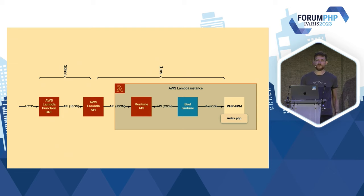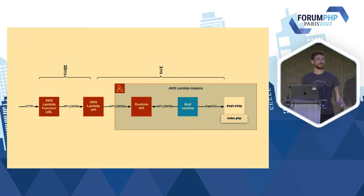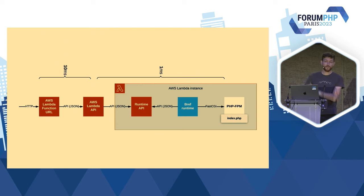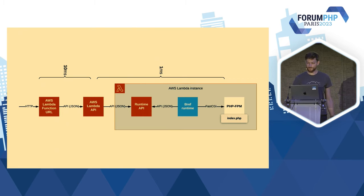Au début, j'avais fait plein de benchmarks sur Bref, quelles stratégies pour adopter — faire des extensions en C, des forks de FPM, est-ce qu'on ne pourrait pas réécrire tout ça en Rust, en Go. Même FrankenPHP, toutes ces choses-là. Après la question, c'est le ROI. Aujourd'hui, le code, il est en PHP, il est simple, et puis ça tourne et ça tourne plutôt vite. Donc pour l'instant, je n'ai pas touché.